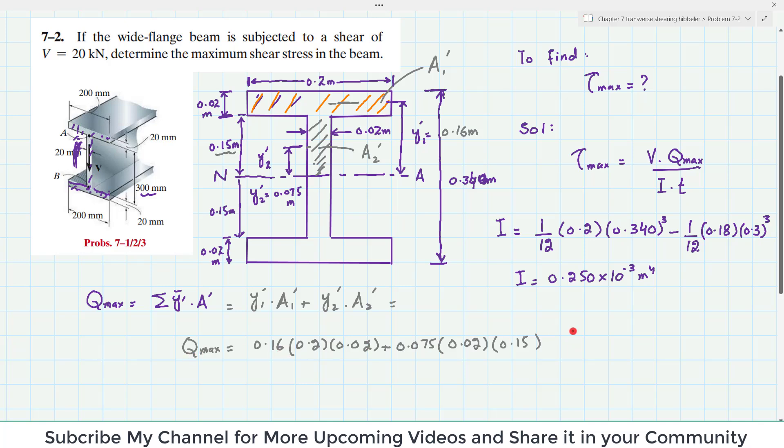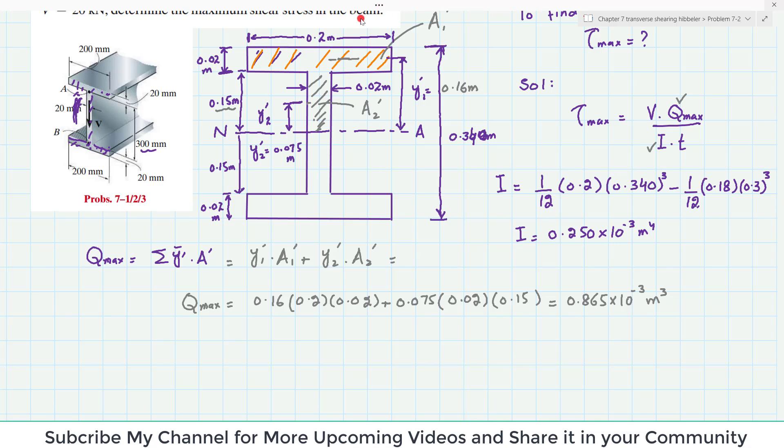This will give you the Q max and this Q max comes out to be 0.865 into 10 raised power minus 3 meter power 3. Now, you can see you have this Q max and I you can put it in this formula to get the maximum shearing stress.